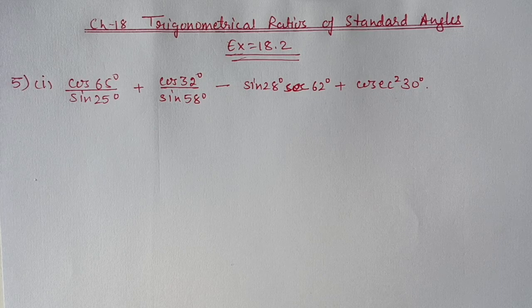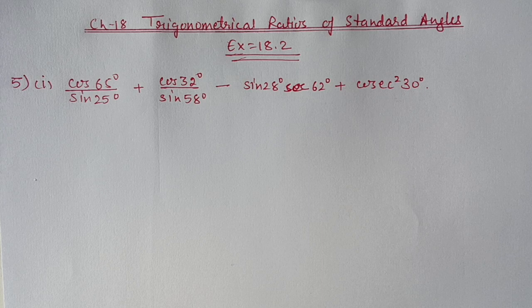Hello students, we are doing Chapter 18: Trigonometrical Ratios of a Standard Angle, Exercise 18.2. In today's video we will start from question number 5, first part: cos65 upon sin25 plus cos32 upon sin58.